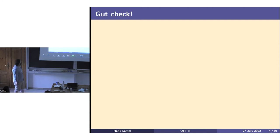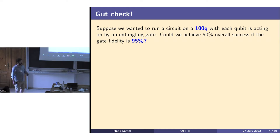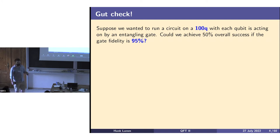I'm going to ask for some feedback from you. Suppose I wanted to run a circuit that has 100 qubits, and each qubit needs to be acted on by at least one entangling gate. Can I get a 50% success rate at the end of my calculation if all of the entangling gate fidelities are 95%? I see heads shaking no.